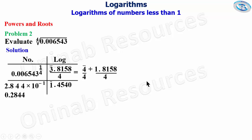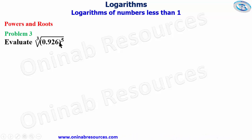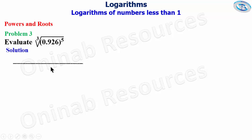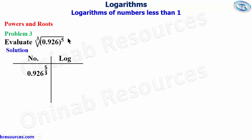That is the end of problem two. For problem three, evaluate the cube root of 0.926 to the power of five. Writing this in index form: the power of five and the cube root one-over-three combine to give five over three. In our solution we place 0.926 raised to the power of five over three under the number column.